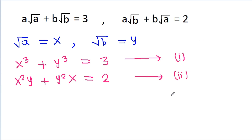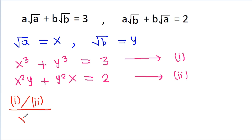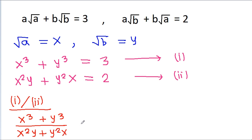If we divide equation 1 by equation 2, then we get (x cubed plus y cubed) divided by (x squared·y plus y squared·x) is equal to 3 by 2.